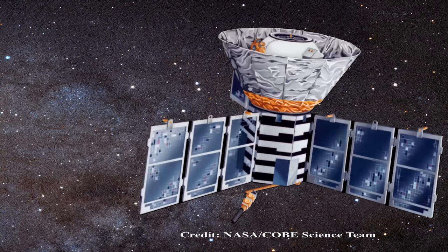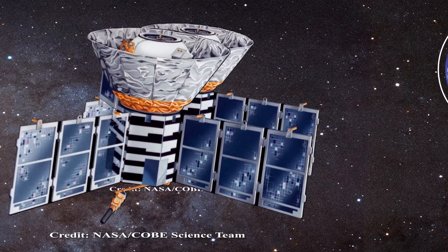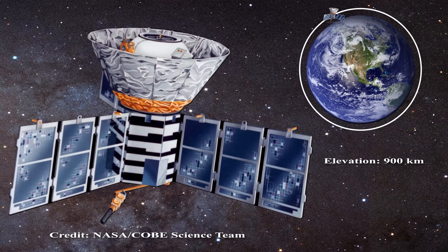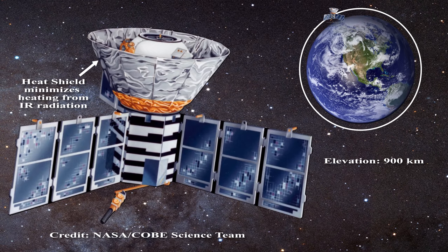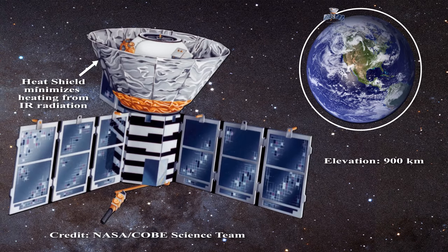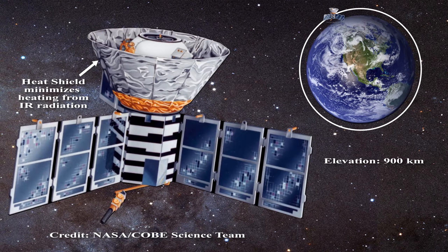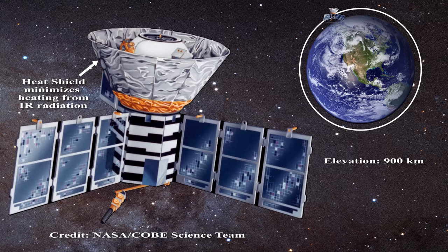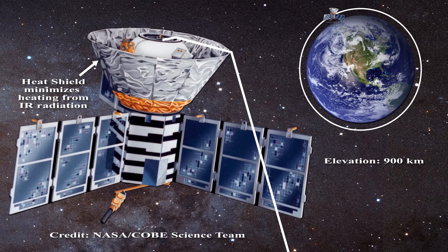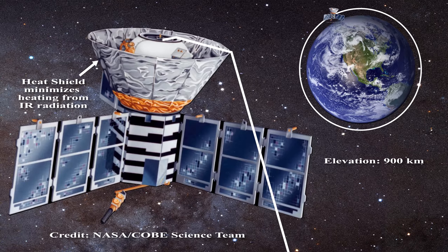COBE was launched in 1989 and positioned in polar orbit around the earth at an elevation of about 900 kilometers. COBE has a heat shield but this shield is designed to prevent earth's infrared radiation from affecting the instruments on the satellite. The shield has no ability to stop microwaves from diffracting into these instruments including the all-important FIRAS horn.